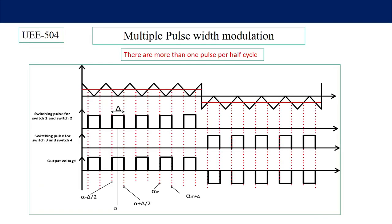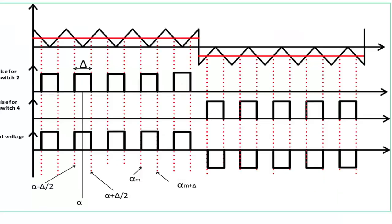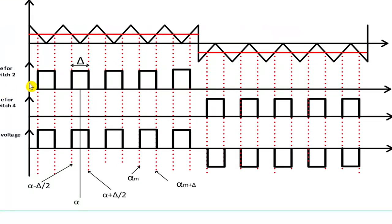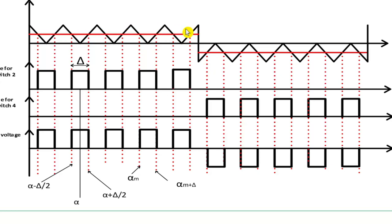In multiple pulse width modulation, there will be more than one pulse per half cycle. You can see there are a number of pulses in the positive half cycle from 0 to pi, and a number of pulses from pi to 2pi. Here, as we have done before, the carrier signal is compared with the reference signal. The carrier signal is triangular and the reference signal is this one.